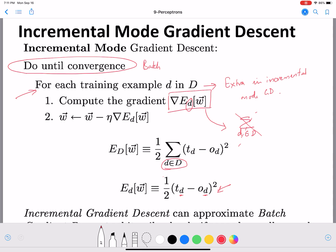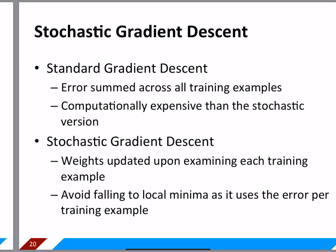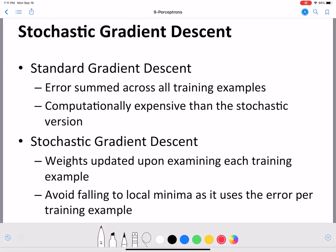The sigma over all d will not be present in the incremental version — that's the only difference. After looking at each example we make a weight update, because this update step is inside the for loop over examples. We make an update after each training example. The error is summed across all training examples in the batch version, whereas weights are updated upon examining each training example in the stochastic version — this is just the algorithmic difference.